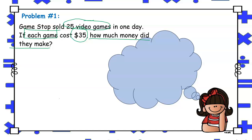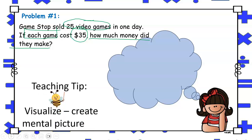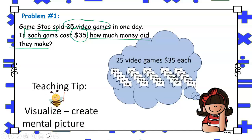It states that each of the 25 games cost the same amount. Now, although it does not outright say equal groups, remind students that they can visualize or create mental pictures like this one where they can picture how each game is the same amount. And since we know we need to find out how much money did the store make selling all 25 games, there are two operations that could actually be used to solve this problem.